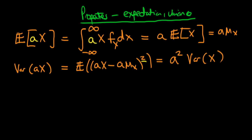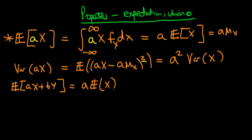A further useful rule is what happens if we take the expectation of a·x plus b·y, where x and y are both random variables and a and b are constants. By a similar argument, this is just equal to a times the expectation of x plus b times the expectation of y. That follows because the expectations operator — the integral — is a linear operator, so we can separate this out into two separate integrals, giving a·mu_x plus b·mu_y.